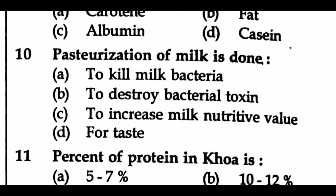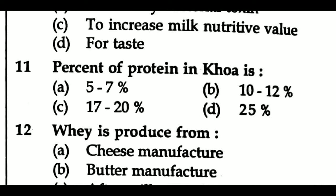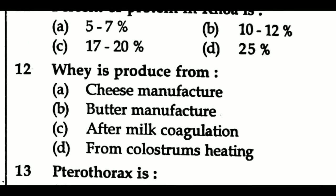Question 10: Pasteurization of milk is done — Option A: to kill milk bacteria, Option B: to destroy bacterial toxin, Option C: to increase milk nutritive value, Option D: for taste. Question 11: Percent of protein in Khoa is — Option A: 5 to 7%, Option B: 10 to 12%, Option C: 17 to 20%, Option D: 25%.